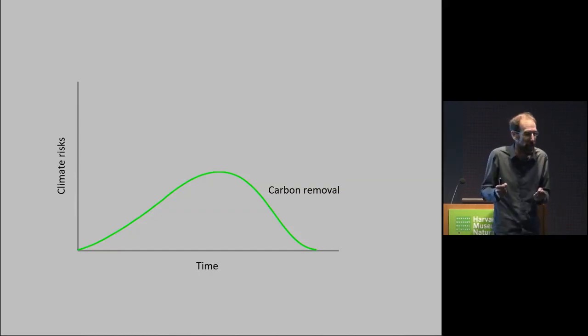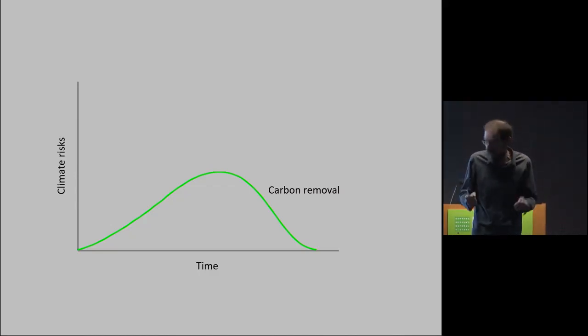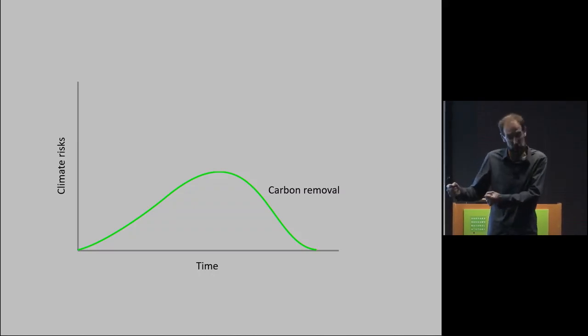Because the reason we can't get it together to cut emissions is a political difficulty of agreeing to spend the money to cut emissions. And it's going to cost more or less the same money or more to do negative emissions. So there's no reason to think that won't be politically harder.